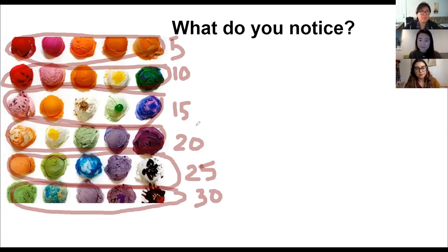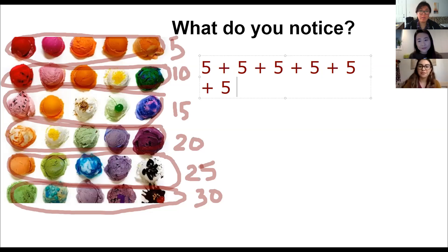So there are thirty ice cream scoops in all. How would you write that as an equation? You could do five plus five plus five plus five plus five plus five, because there are how many rows? There are six rows. So if we write that in a multiplication equation, there are six groups of five, so six times five equals thirty.